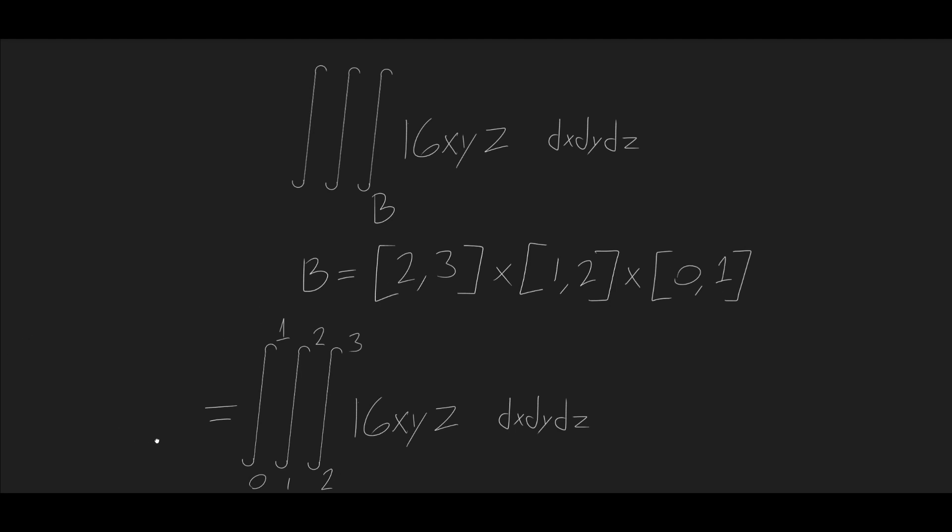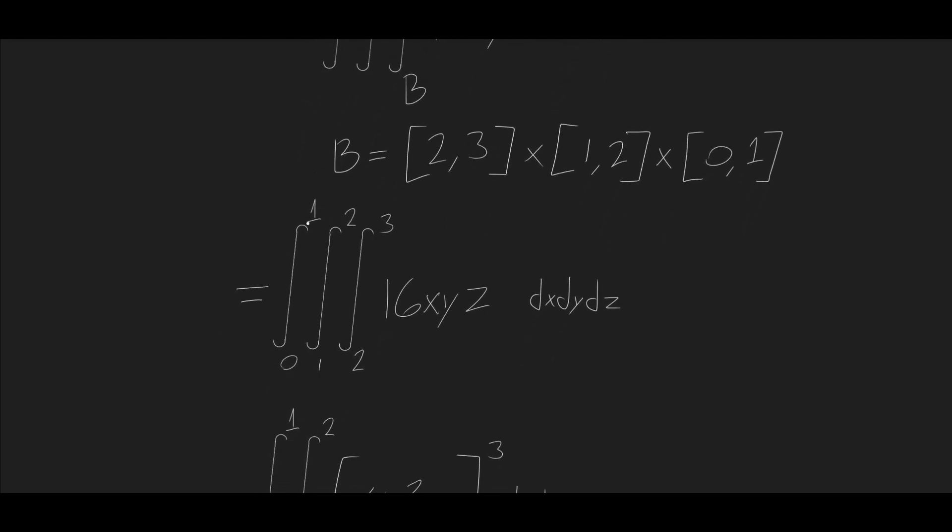We can set up our triple integral like this, and we can say that the bounds for x is 2 to 3, for y it's 1 to 2, and for z it's 0 to 1. And we have our function, f of x comma y comma z in the middle.